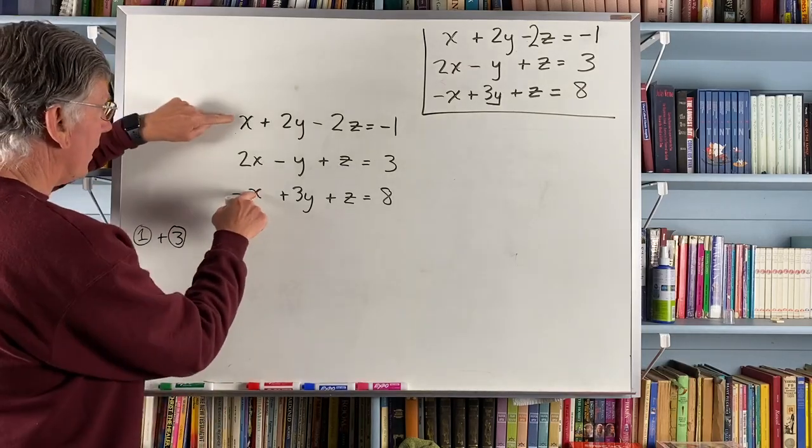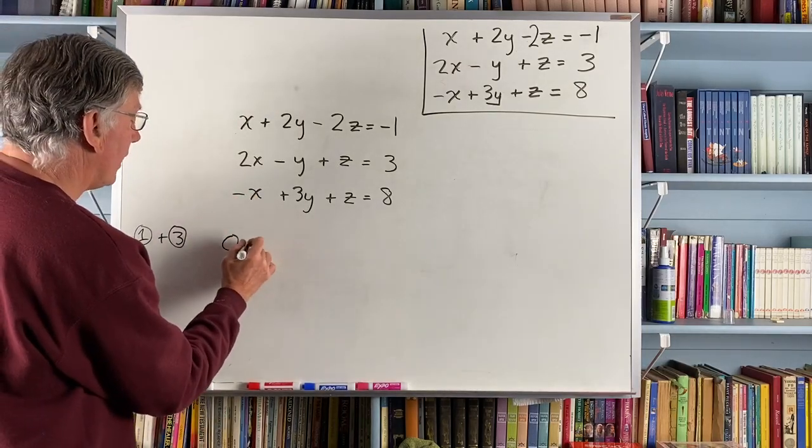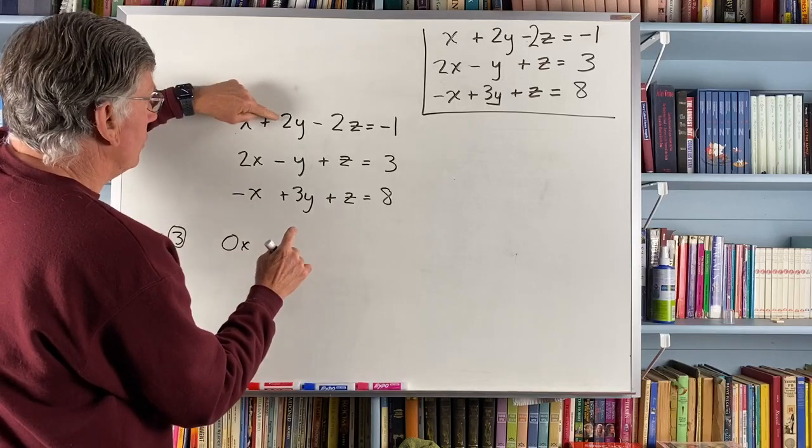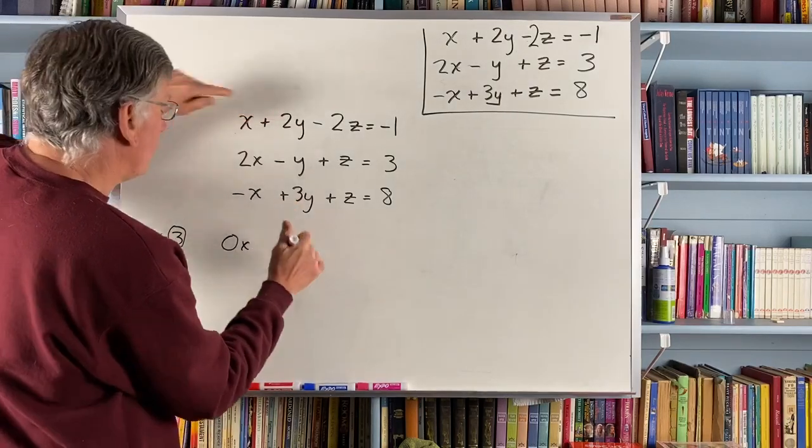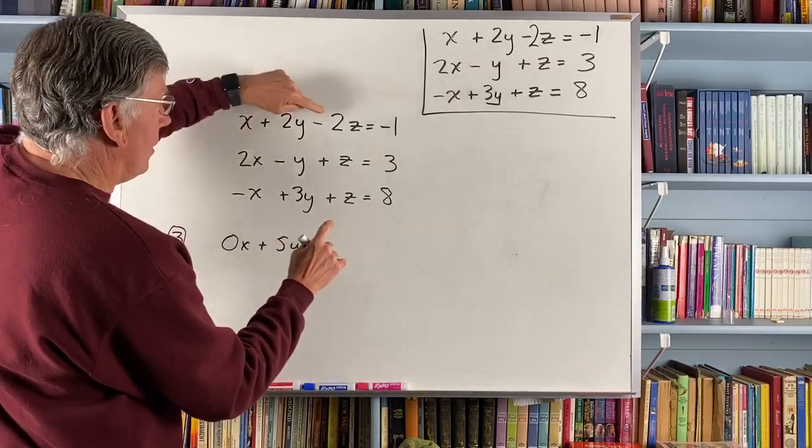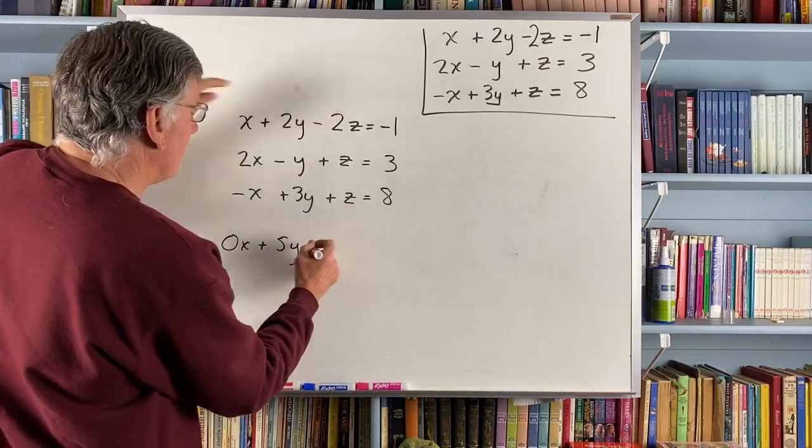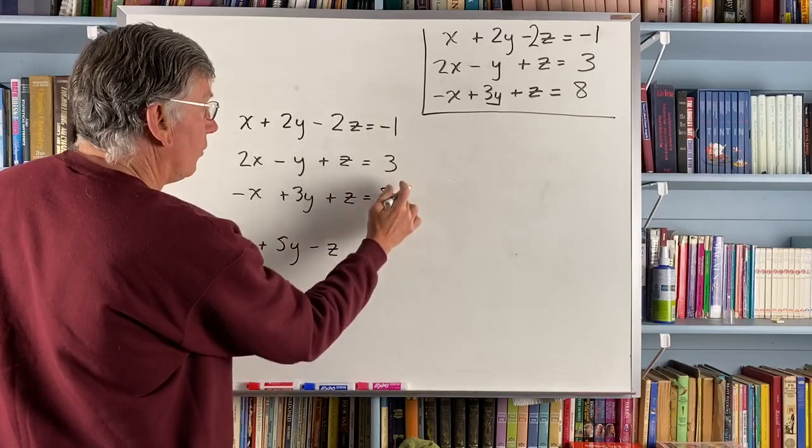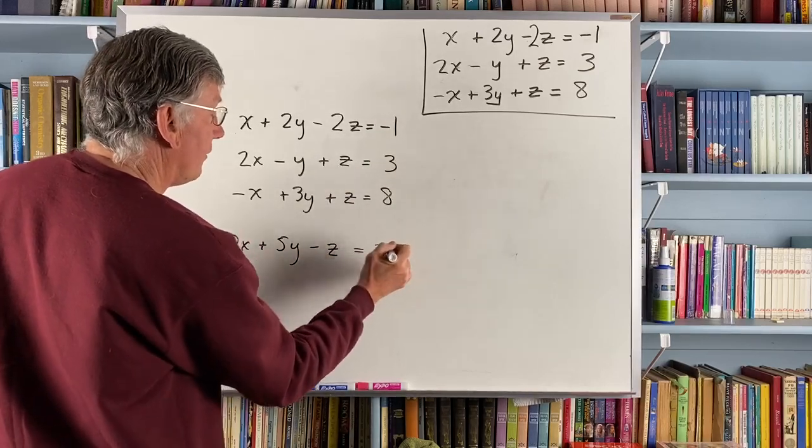So I do that and I get x minus x is zero x, 2y plus 3y is 5y, minus 2z plus z is minus z, minus 1 plus 8 is 7.